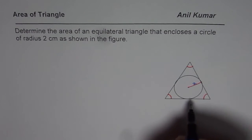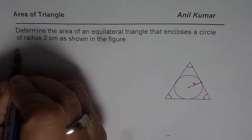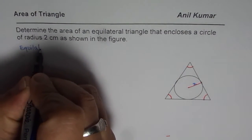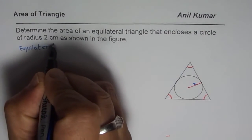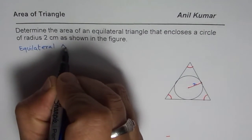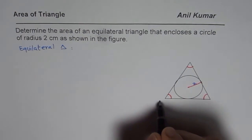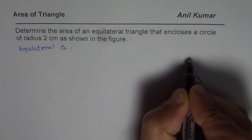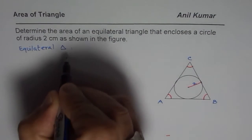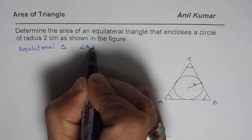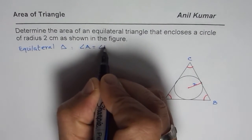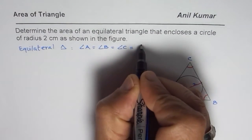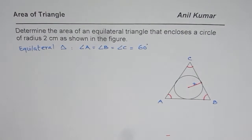One thing we know is this is an equilateral triangle. Let me name the triangle ABC. So we have angle A equals angle B equals angle C, which is equal to 60 degrees.